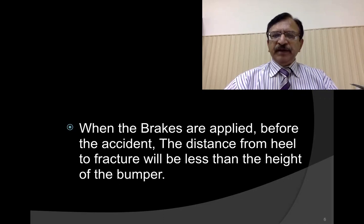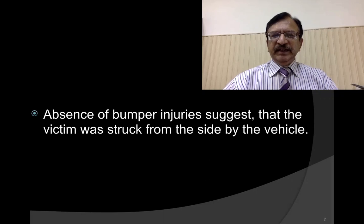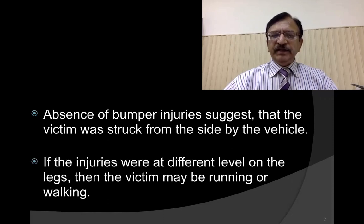When the brakes are applied before the accident, the distance from the heel to the fracture will be less than the height of the bumper. Absence of bumper injuries suggests that the victim was struck from the side by the vehicle. If the injuries are at different levels on the legs, then the victim may have been running or walking.